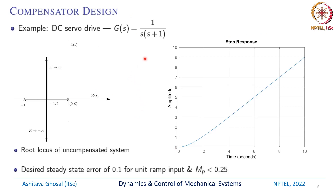Let's take a simple example. We go back to our usual DC servo drive where the transfer function is given by 1 divided by s(s+1), with k, inertia J, and friction all chosen to be 1. In the case of this DC servo drive transfer function there are two poles at s = 0 and s = -1. As the gain is increased from 0 to infinity, the branches of the root locus will come towards each other and then go off to infinity.